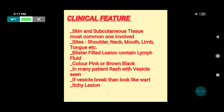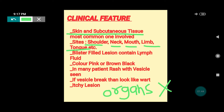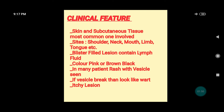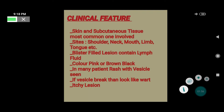The clinical presentation of lymphangioma circumscriptum: it involves the skin and subcutaneous tissue only — systemic organs are not involved. The commonly affected sites include the shoulder area, neck, mouth, upper or lower limbs, and the tongue. These are the common sites where lesions develop.